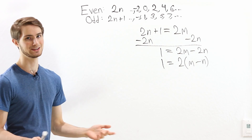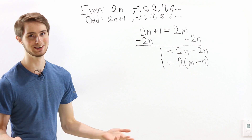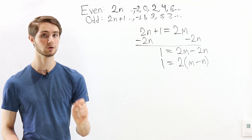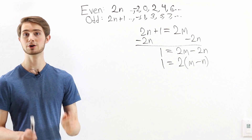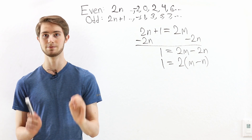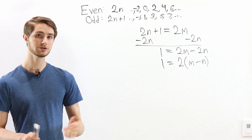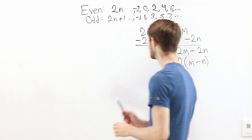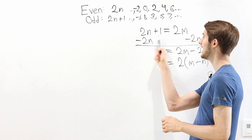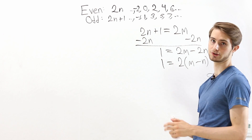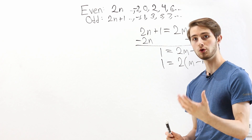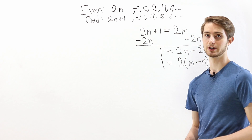Now this might seem like a silly thing to prove — of course everyone knows odd numbers aren't even. But this same proof technique comes up in important places too, and we're going to look at that next, because we're going to prove that there are infinitely many prime numbers. In order to do that, let's start by assuming the opposite, just like we did here. Over here we assumed what would happen if an odd number was also even, so here we're going to assume what would happen if there were only finitely many prime numbers.